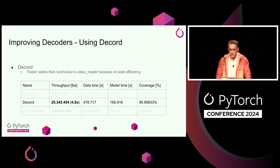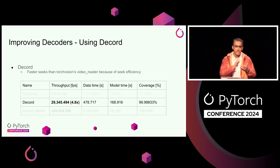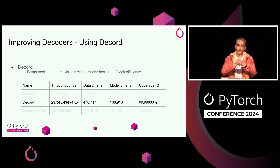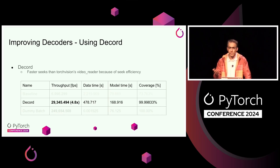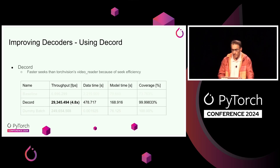When we saw that TorchVision was slow, we tried a different video decoder called Decord. Decord is more efficient than TorchVision at the seeking part, so it can seek more efficiently in the middle of videos. Since we were sampling frames from the middle of videos, Decord improves performance over TorchVision by about 4.8x. The coverage also goes up because it uses a different FFmpeg version.